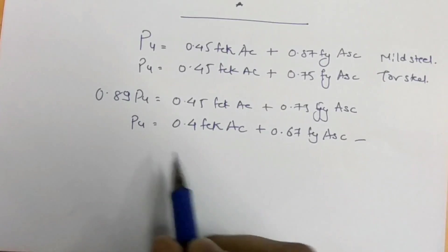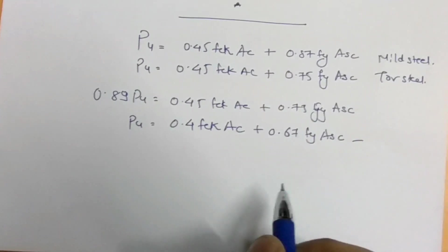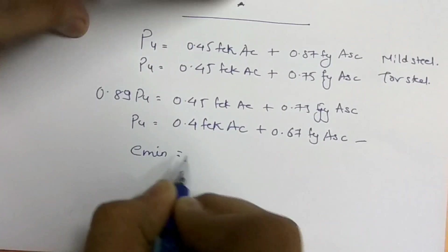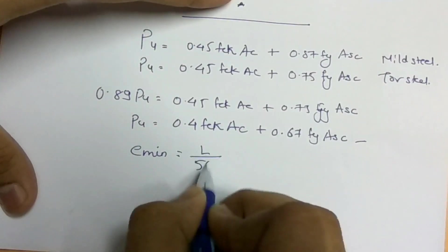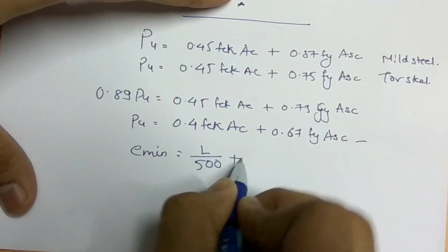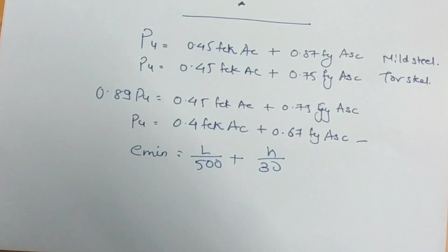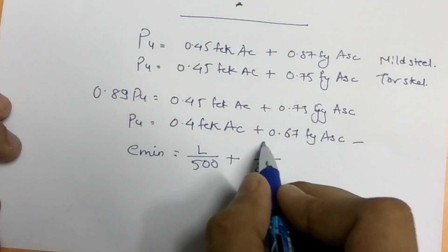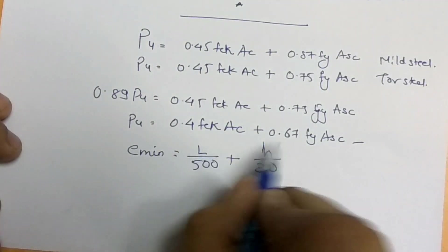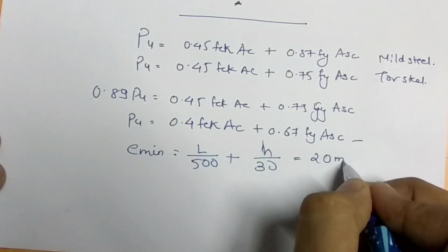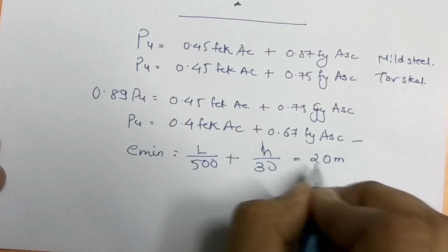For the question to remain valid, we need to check the minimum eccentricity. The minimum eccentricity equals l/500 plus h/30, where h is the least lateral dimension of the column — the smallest size of the column cross-section. This value should not be less than 20 mm; it must be equal to or more than 20 mm.